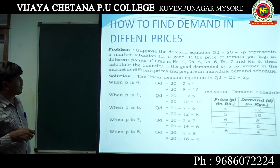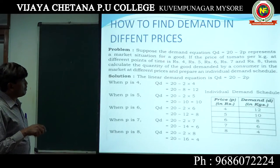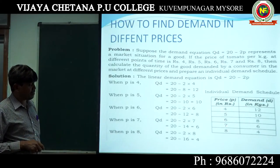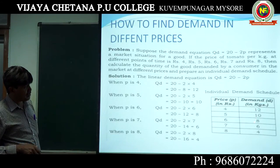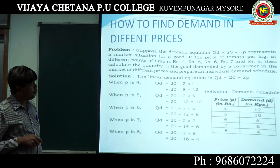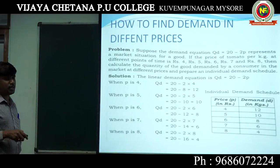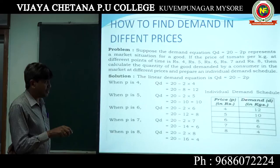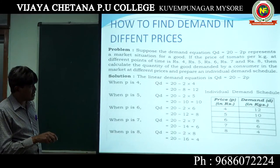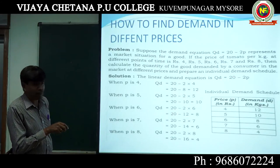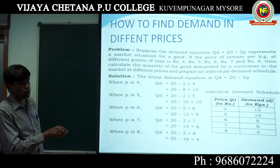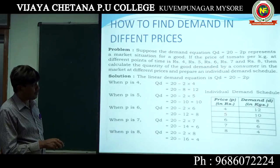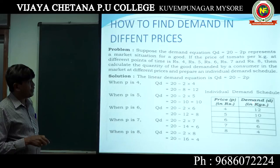Let us see how to find the demand at different prices. See the schedule here — prices are 4, 5, 6, 7, 8. Demand values are 12, 10, 8, 6, 4. In an examination question, they give price and demand function. See here: QD = 20 − 2P. They will give the demand function and price; you put the price in place of P to get the demand. For example, when P is 4: QD = 20 − 2(4) = 20 − 8 = 12. So quantity demanded is 12 at price 4 rupees.